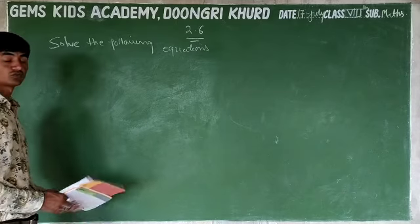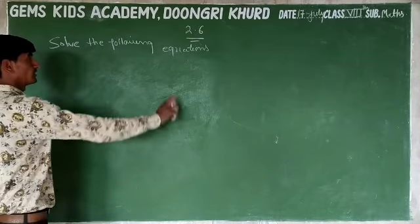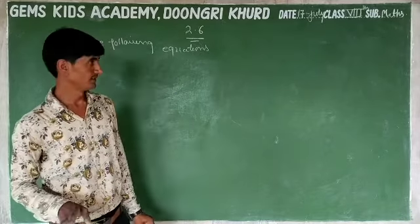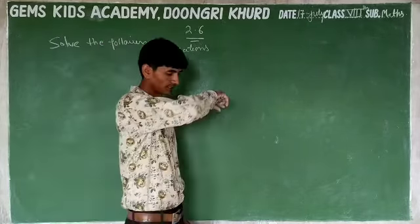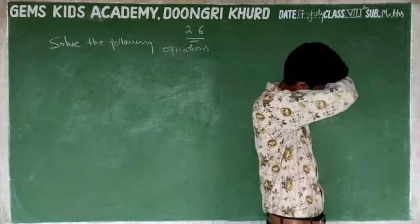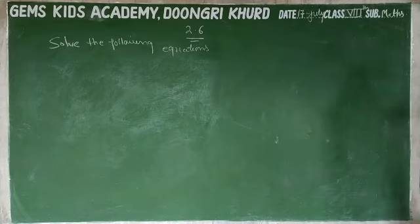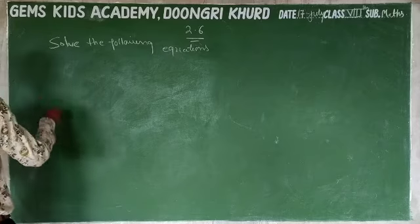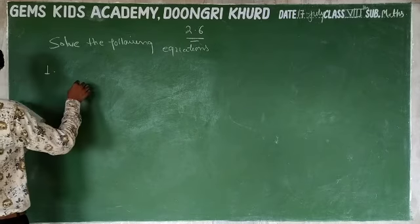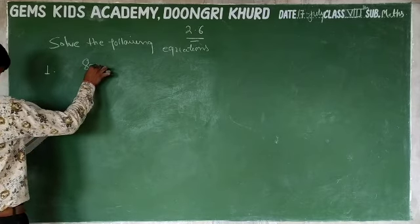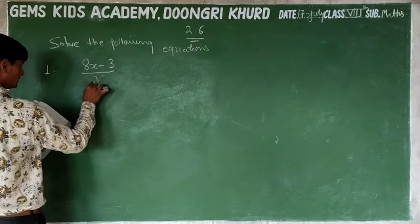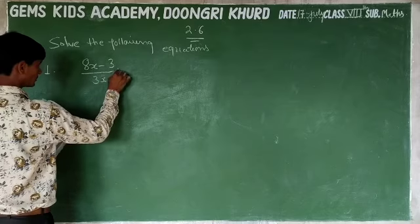First, we have to solve the following equation. We have to start with the first equation: 8x minus 3 upon 3x equal to 2.